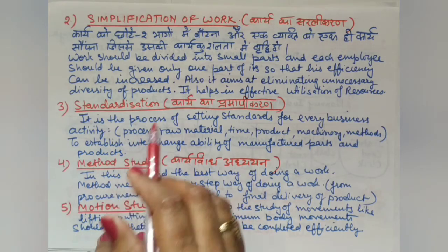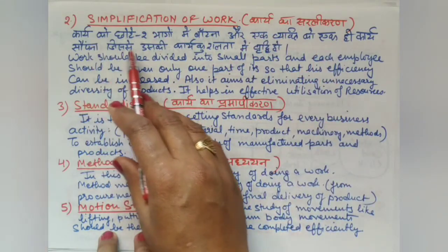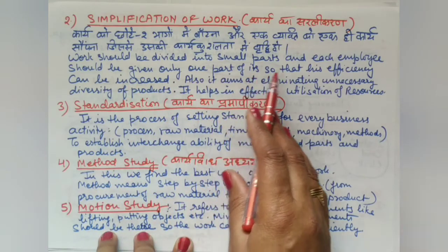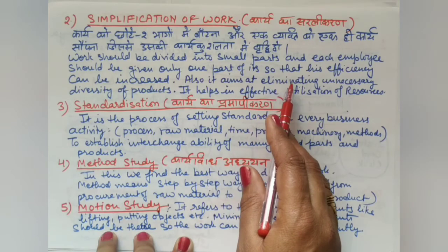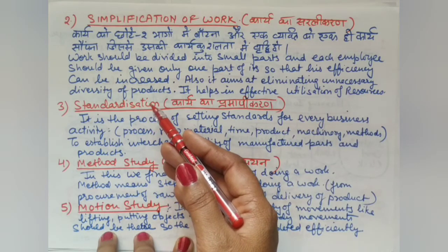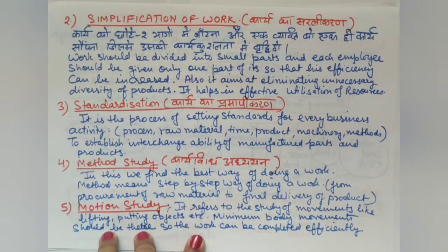The second technique of F.W. Taylor is Simplification of Work. Work should be divided into small parts and each employee should be given only one part, so that efficiency can be increased. This also aims at eliminating unnecessary diversity of products, as unnecessary varieties require more raw materials. It helps in effective utilization of resources and stops wastage.